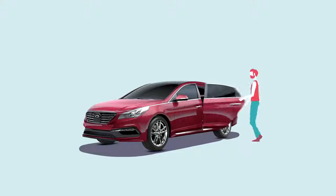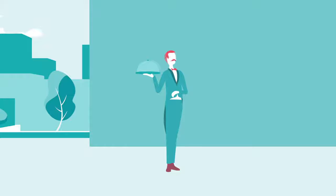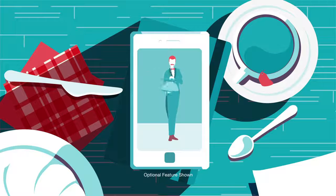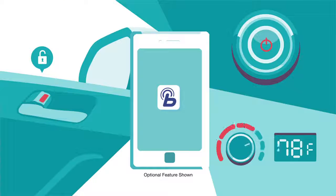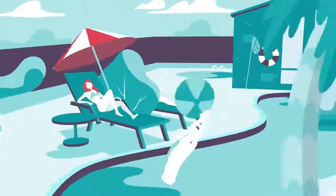For example, Blue Link remote access is like having the world's fastest valet who also works as your butler, except he lives in your phone. And instead of serving tea and crumpets, it unlocks your car, starts the engine, even has the heat running if it's cold outside, all with the tap of a button. And it doesn't matter where you are because Blue Link is with your car.